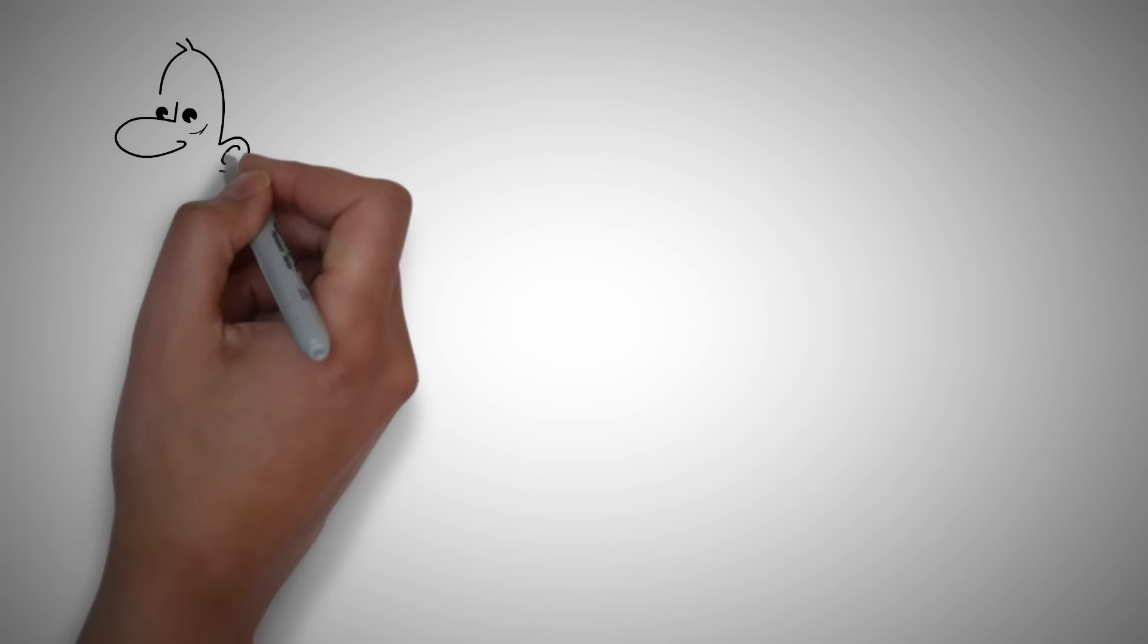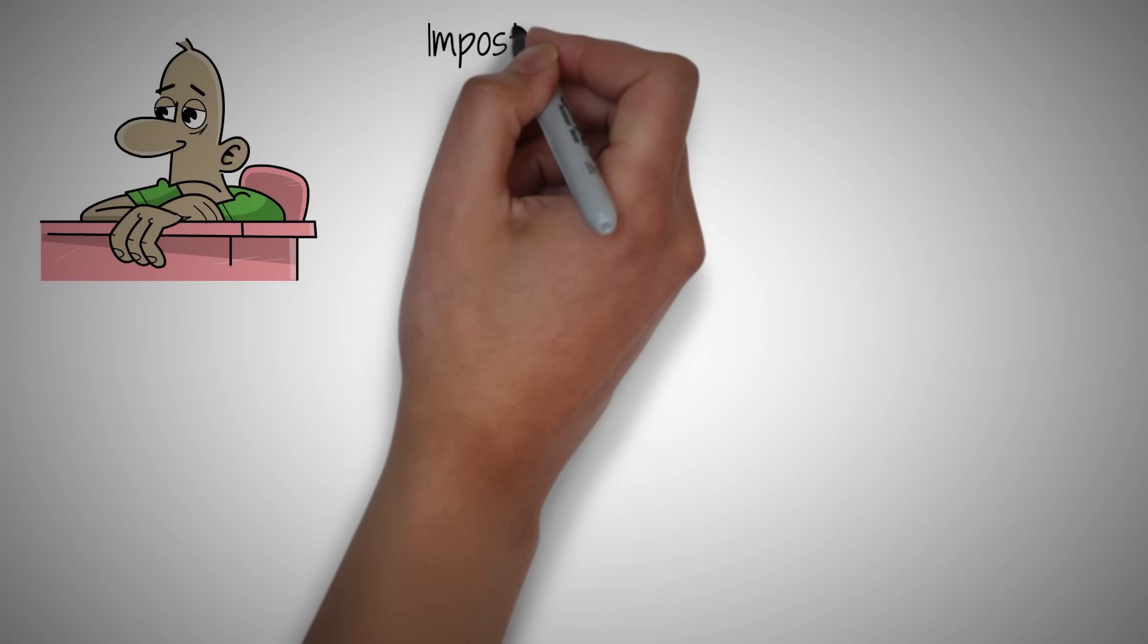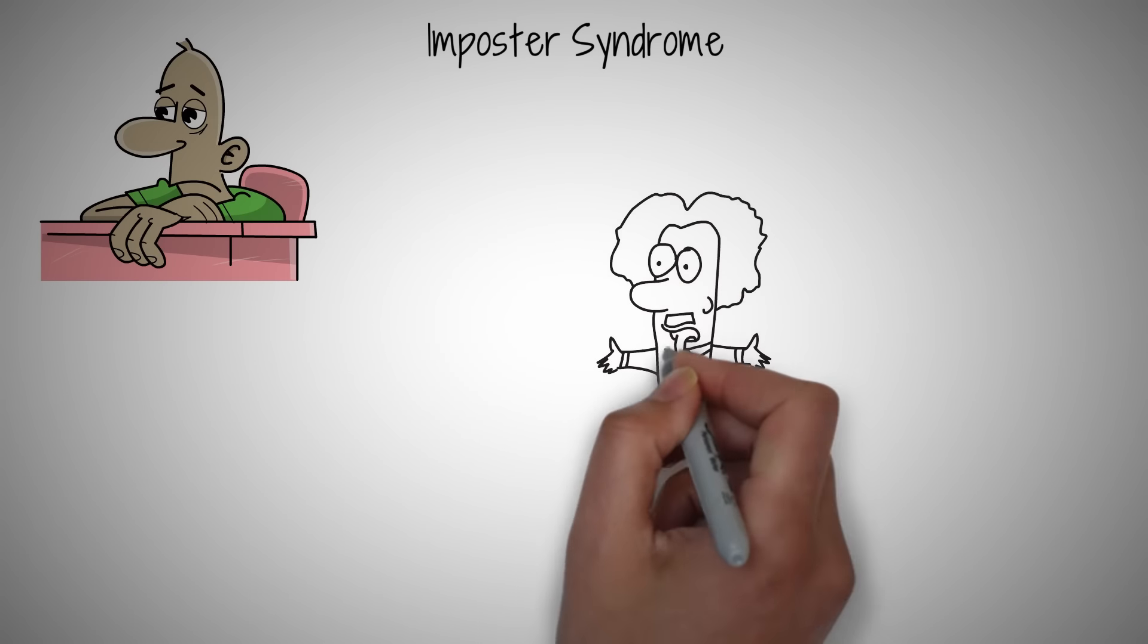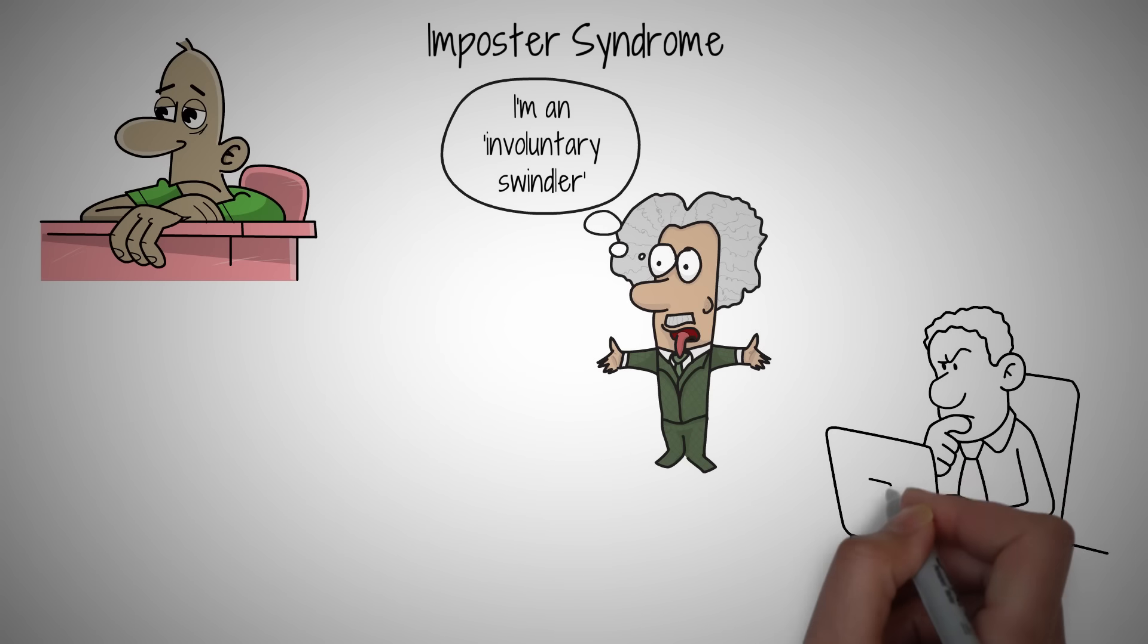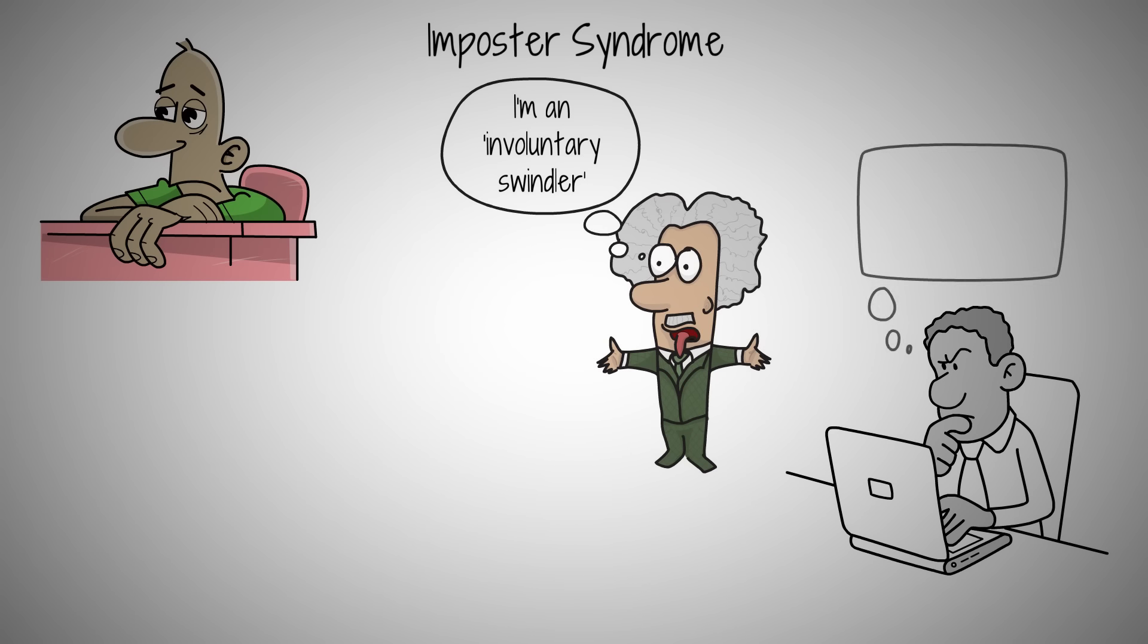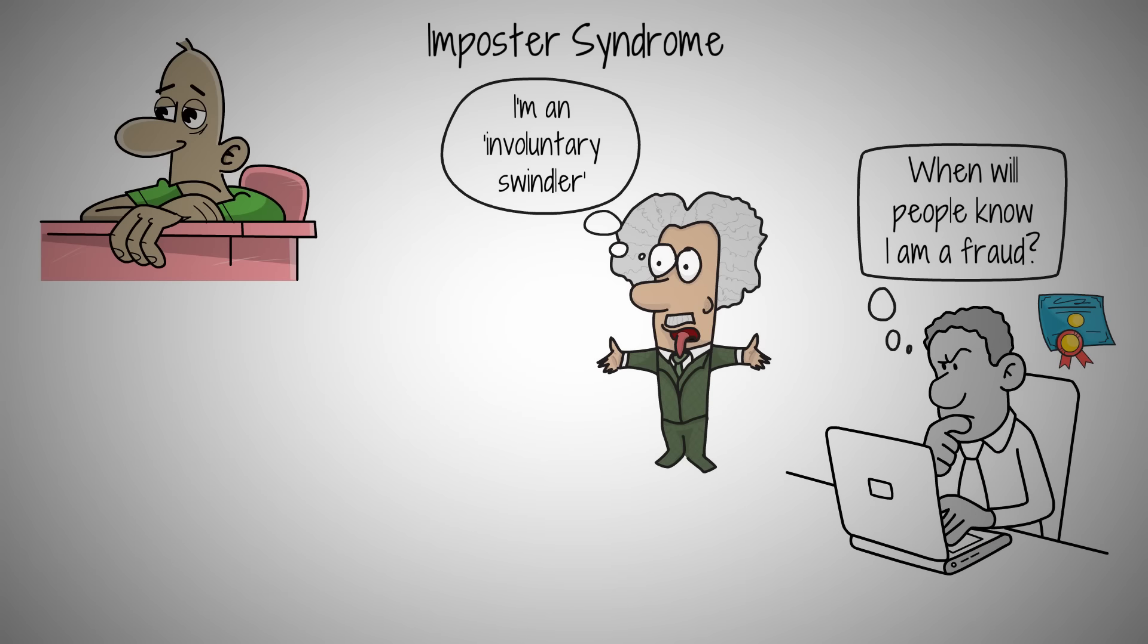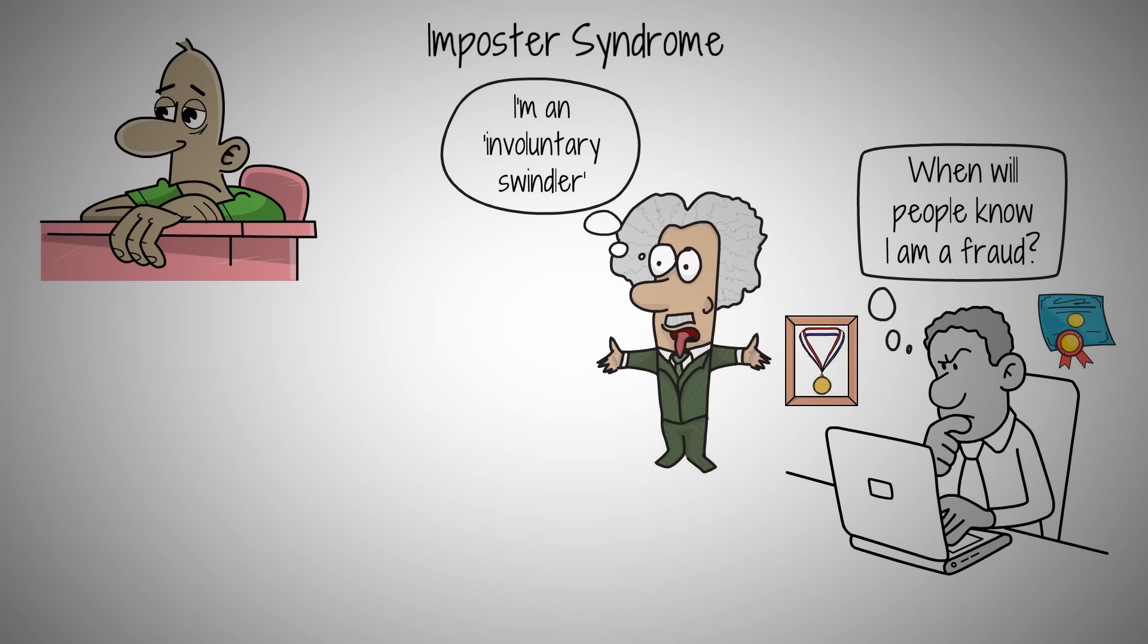Ever felt like you're not as competent as others think? You're not alone. This feeling is known as imposter syndrome. Consider Albert Einstein. Despite his groundbreaking work in physics, he often felt he didn't deserve his accolades, calling himself an involuntary swindler. Even the brightest minds can doubt their success. Imposter syndrome is that nagging thought that you're a fraud, waiting to be exposed, despite evidence of your capabilities. It's common among high achievers who can't internalize their success.